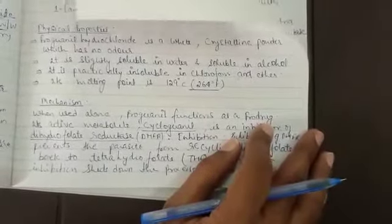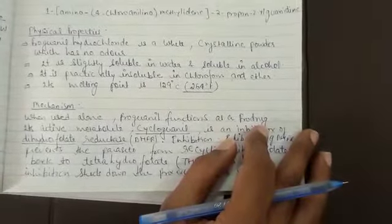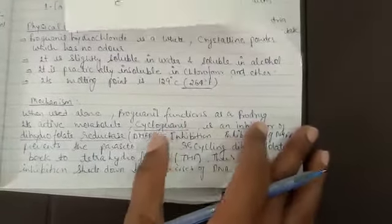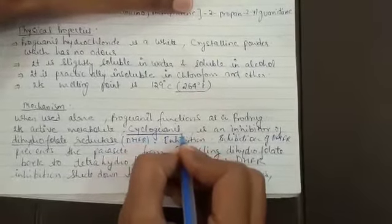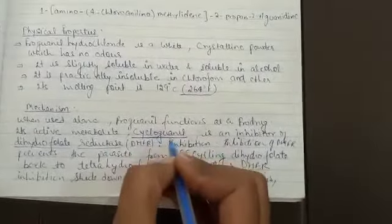Its active metabolite, which is the breakdown of proguanil made in the liver, made in the body, this active metabolite is called cycloguanil. When proguanil is metabolized, it is made into this active form.